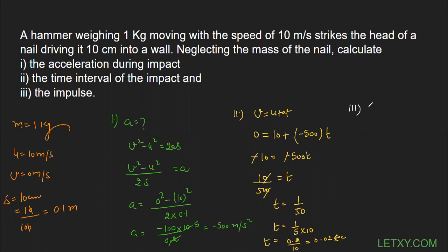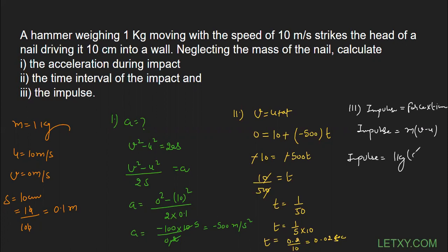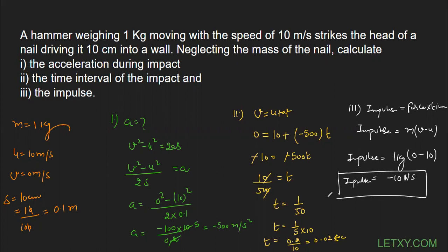In the third part we need to find the impulse. There are two formulas: impulse = force × time, and impulse = m(v − u), which is the change in momentum. Using the second formula: impulse = 1 × (0 − 10) = −10 Newton-second. Note it is Newton-second, not Newton per second — that is a common mistake. So impulse = −10 N·s.